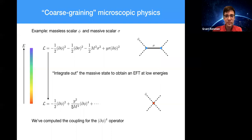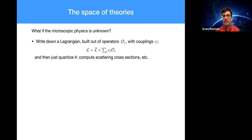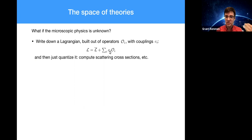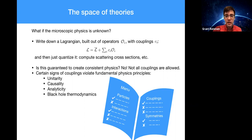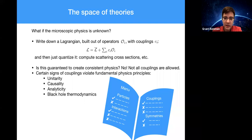What if the microscopic physics is unknown — if we don't know full quantum gravity or all particle physics up to arbitrarily high energies? We can write down a Lagrangian with arbitrary couplings and quantize it. But amazingly, this process is not guaranteed to create a consistent set of laws of physics — not all choices of couplings are allowed. From the menu of particles, interactions, couplings, and symmetries, certain combinations are provably forbidden because they violate fundamental physics principles: unitarity of quantum mechanics, which encodes conservation of probability; causality — no time machines; analyticity, which is sort of like locality; and self-consistency of thermodynamics. I'll call all these infrared consistency.